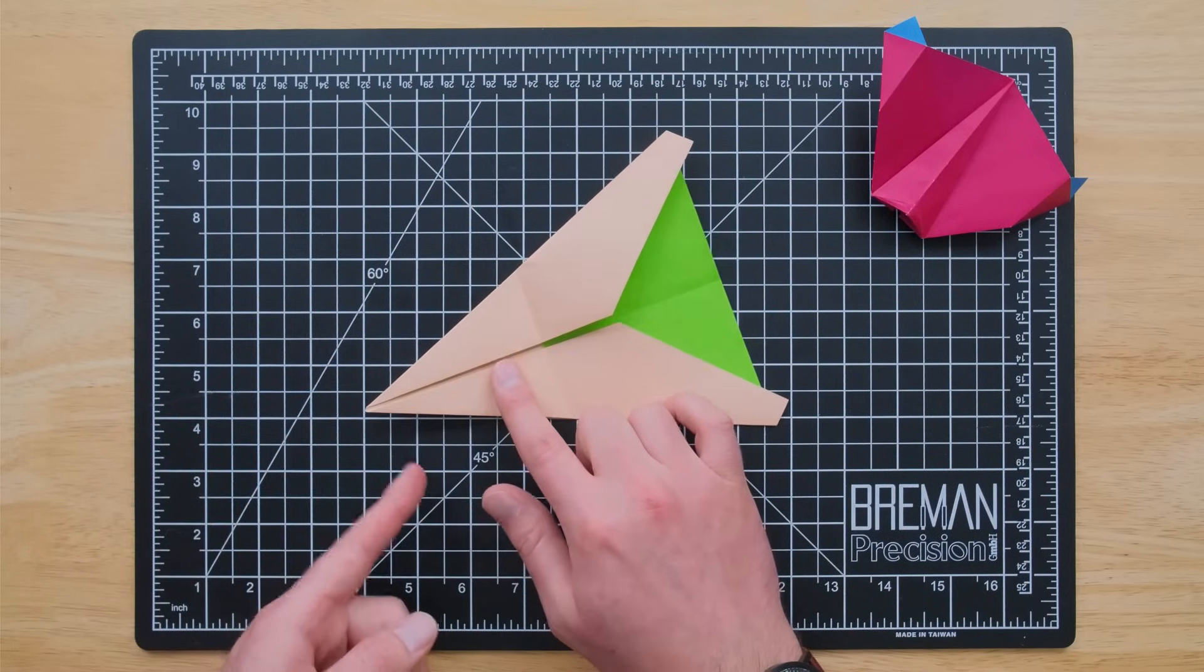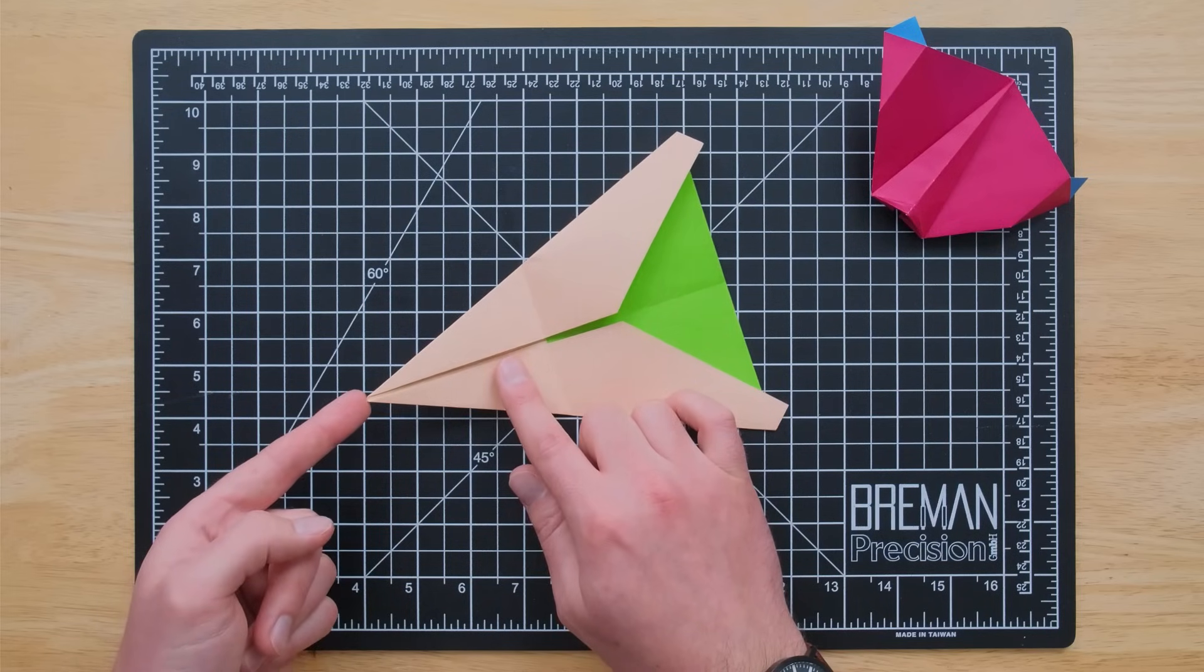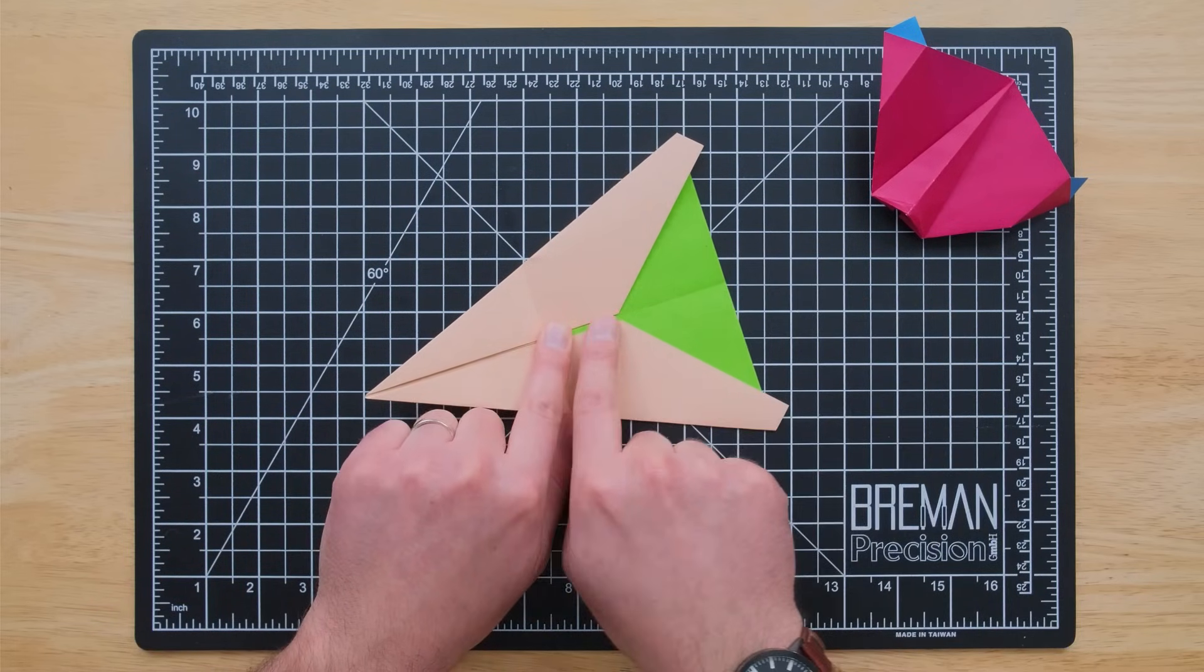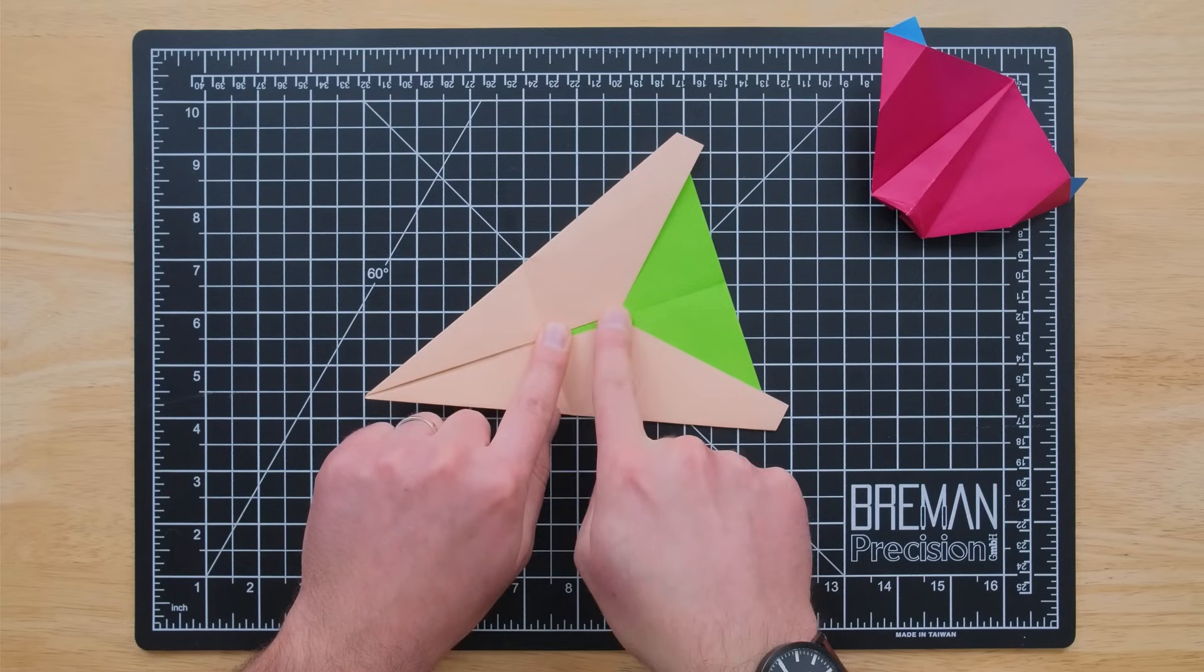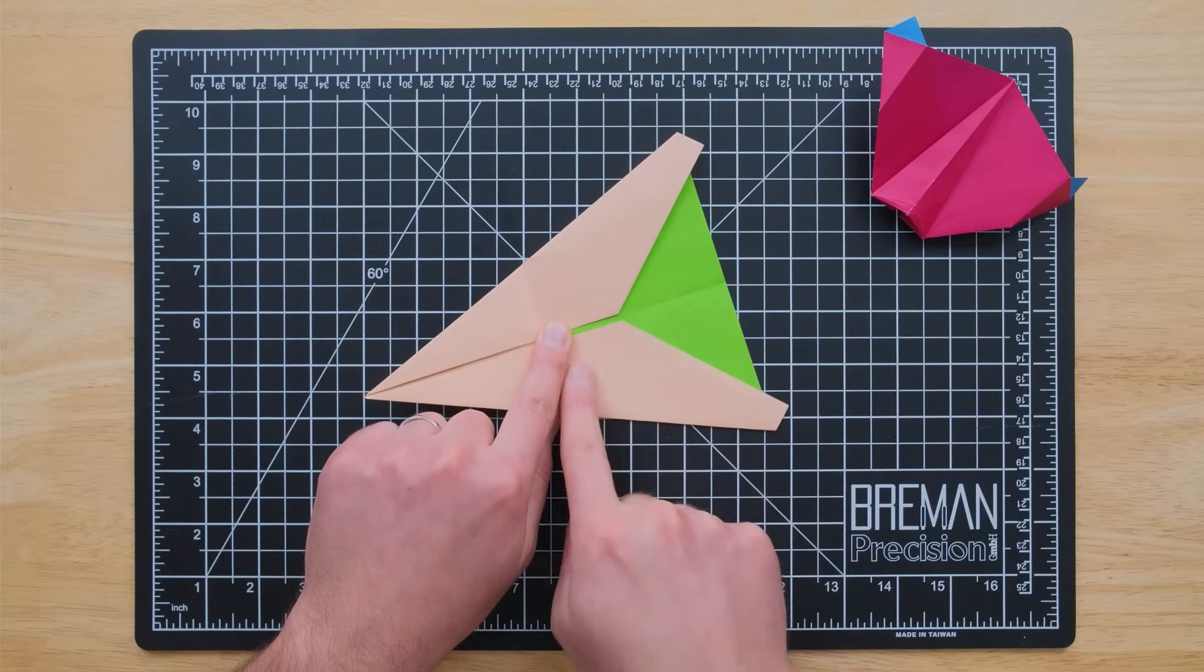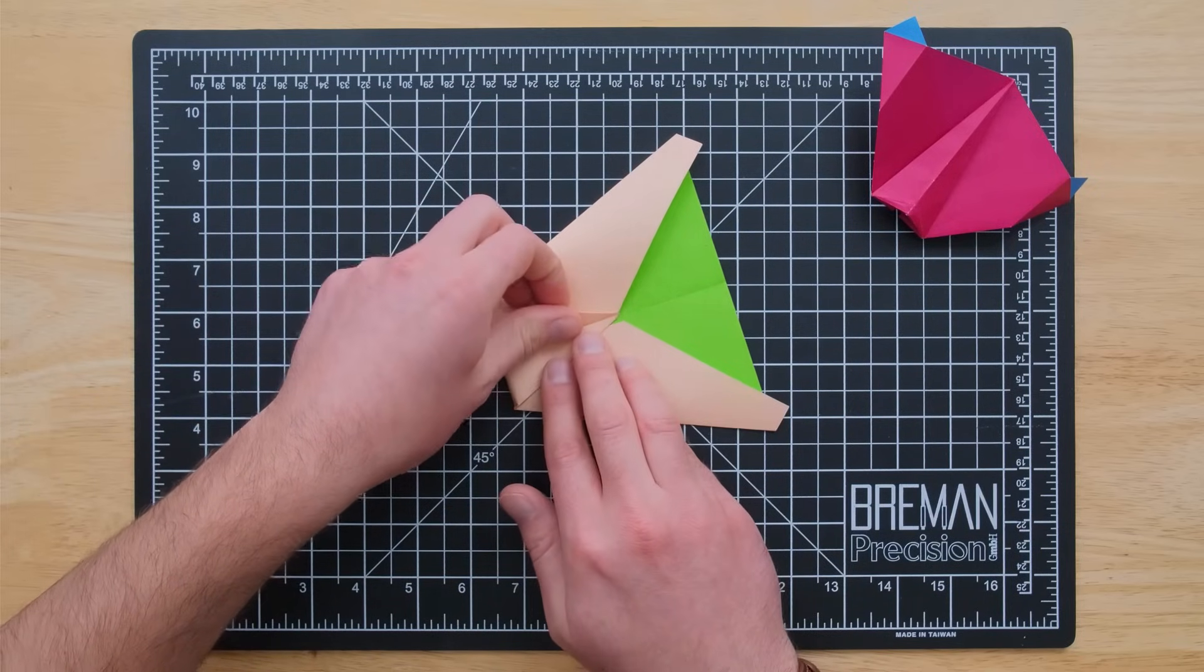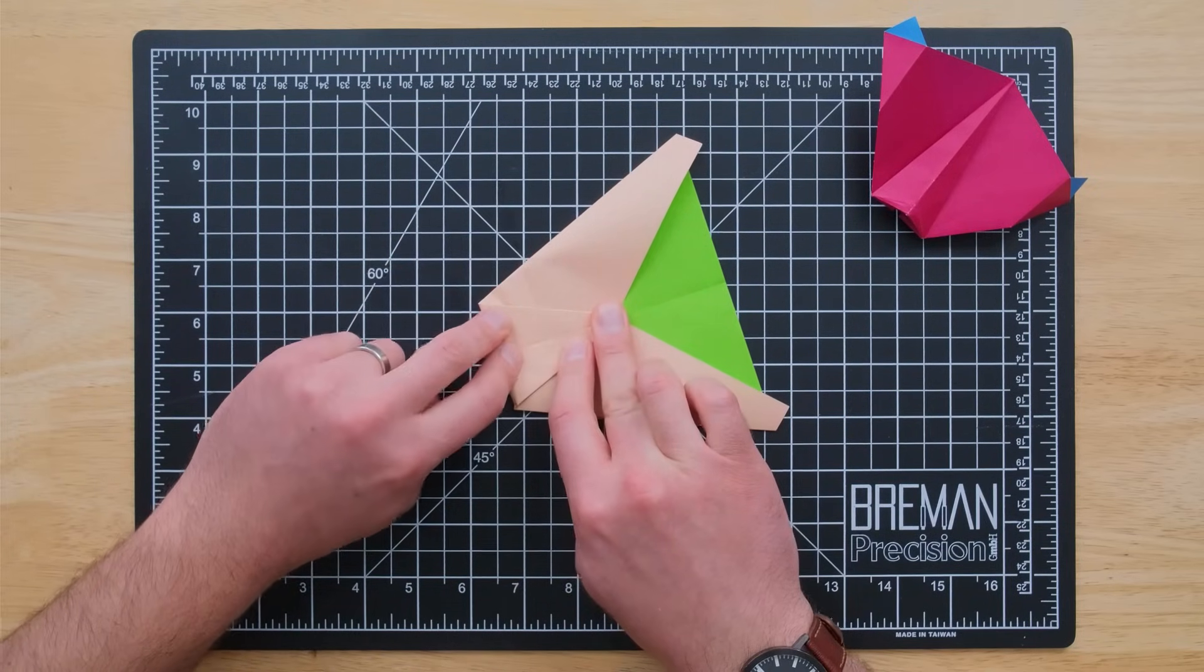And now we're going to repeat that fold. We're going to take this point here. But instead of matching it to the back edge, we're actually going to match it to this section here where these fold points come together. So we're going to fold it just a little bit further towards the nose of the airplane this time.